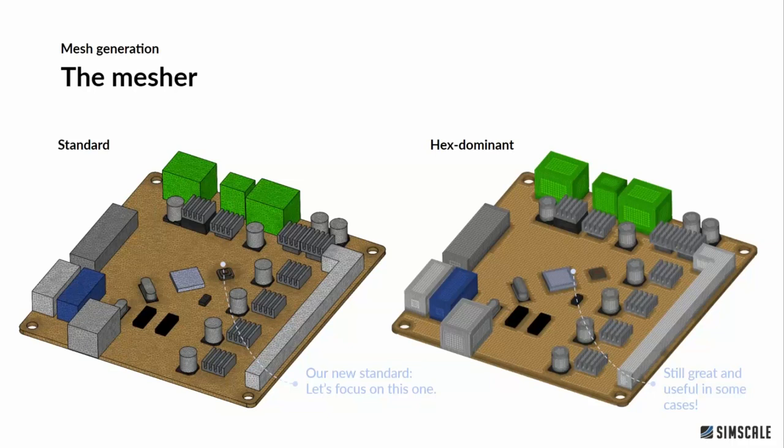Now let's talk about the new mesher. At the moment we have two main meshing algorithms on the platform. Our new standard mesher is able to handle complex geometries, tackle smaller edges, and automatically refine and capture geometry details well. The other — the traditional hex-dominant mesh — can also be useful in some cases, particularly for mesh-independence studies.